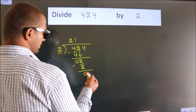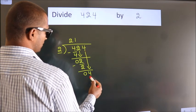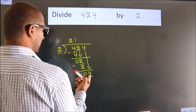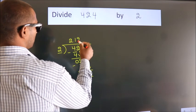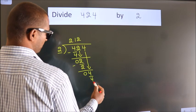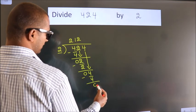After this, bring down the beside number. So 4 down. So 4. When do we get 4 in 2 table? 2 2s, 4. Now we subtract. We get 0.